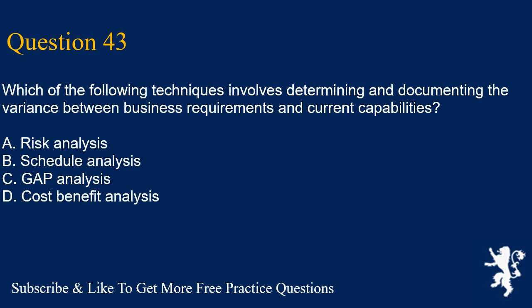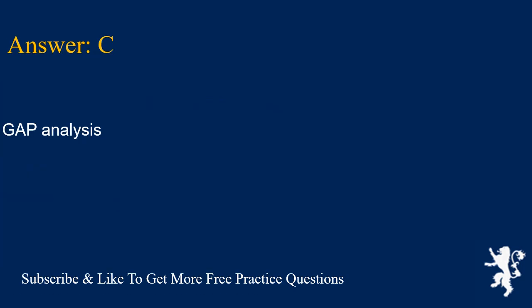Question 43: Which of the following techniques involves determining and documenting the variance between business requirements and current capabilities? A. Risk analysis. B. Schedule analysis. C. Gap analysis. D. Cost benefit analysis. Answer is C. Gap analysis.